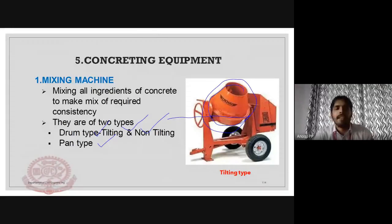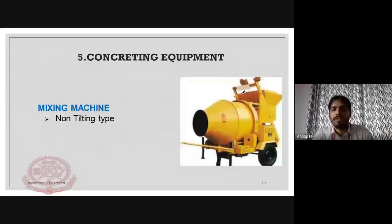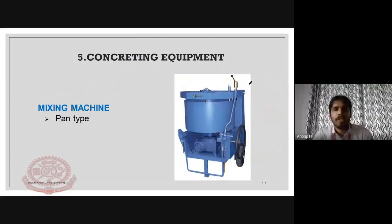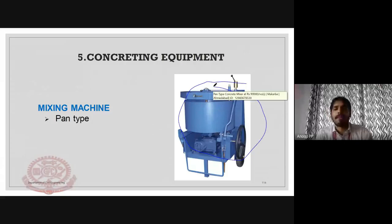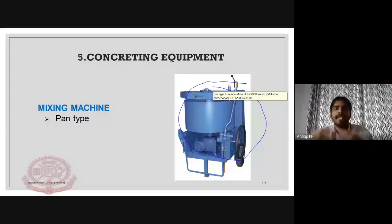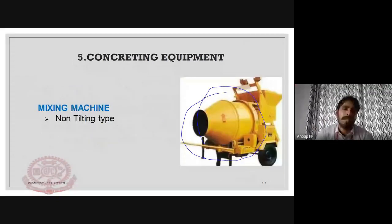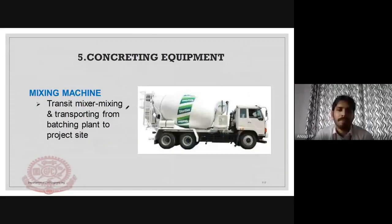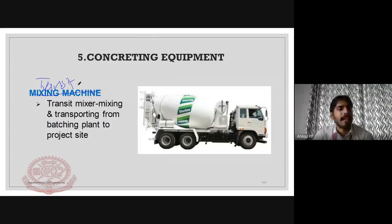The non-tilting type of mixer does not tilt for discharge. The pan type mixer uses a pan configuration. A transit mixer is not a stationary mixing machine — it mixes and transports concrete from the batching plant to the project site. They are known as transit mixers.